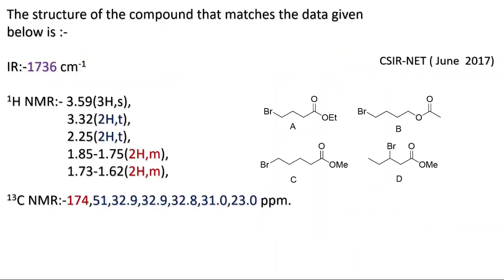We will do another problem which is asked in CSR Net June 2017. The question is: the structure of the compound that matches the given data below is — they have mentioned IR data at 1736 cm⁻¹, which is typically for an ester group. If you see options A, B, C, D, all have an ester group, so this IR data gives limited information only.